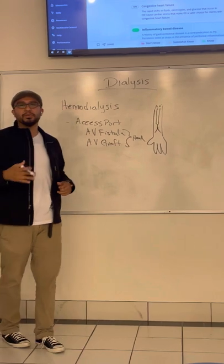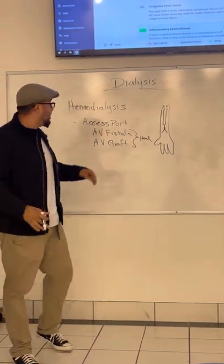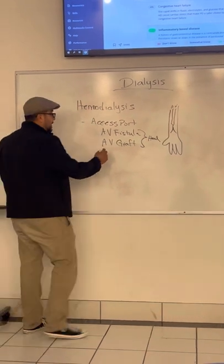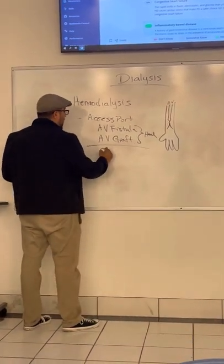So if the patient has acute kidney failure where they need to start dialysis right now, this is not enough because we need an access port that can access the blood right now. And that's when you have your catheter.